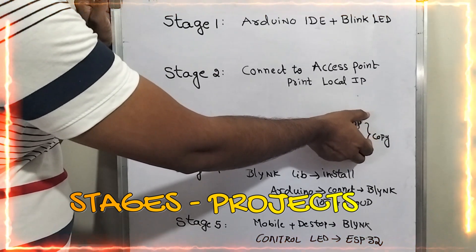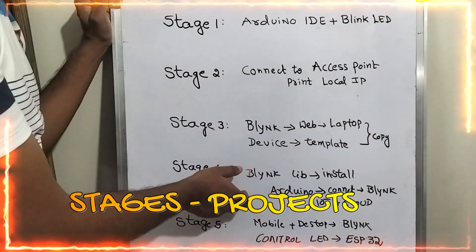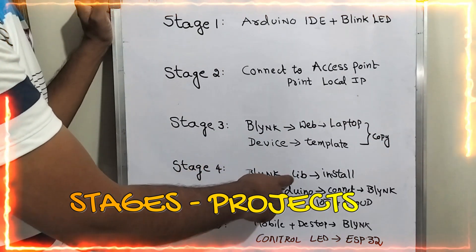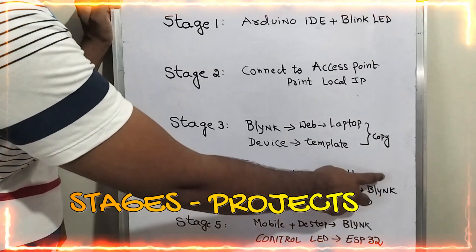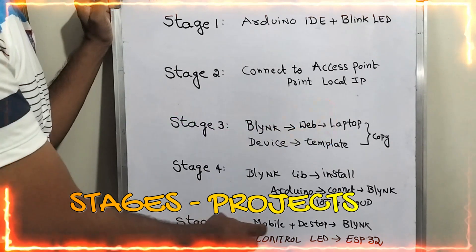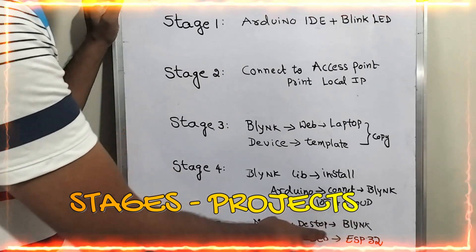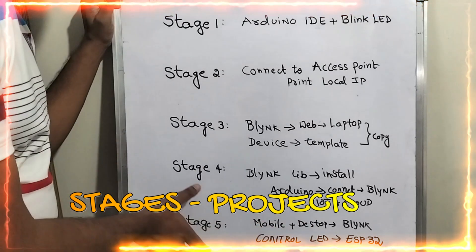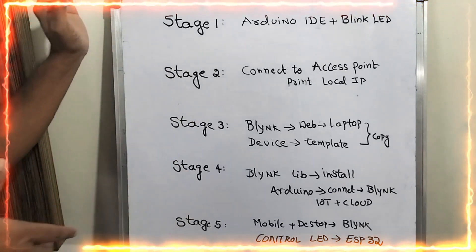In stage four, we need to install the Blynk libraries in Arduino IDE and copy the credentials into our code. Stage five: get familiar with the Blynk mobile and desktop application, where we create widgets to control the LEDs. The commands will be received by the ESP32 over the IoT cloud to control the LEDs. These are the major stages.